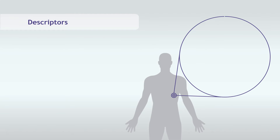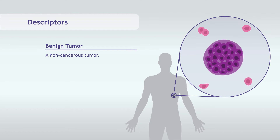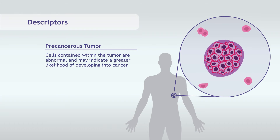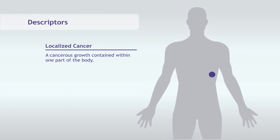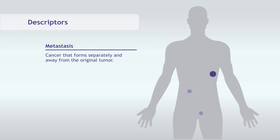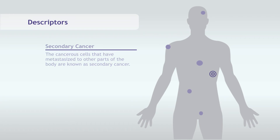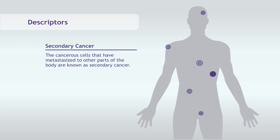As your doctors diagnose your cancer, there are a number of descriptors you may hear in relation to your disease. A benign tumor is non-cancerous. If the tumor is precancerous, cells contained within the tumor are abnormal and may indicate a greater likelihood of developing into cancer. Localized cancers are contained within one part of the body. Metastasis refers to cancer that forms separately and away from the original tumor. The original tumor is known as the primary cancer, while the metastasis is known as the secondary cancer.